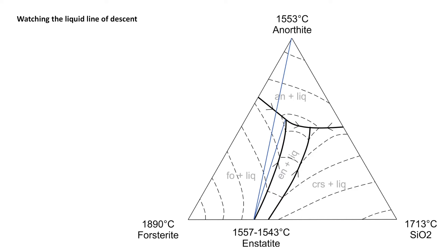What's useful at the start of these diagrams is if we draw lines between the peritectic phase — which is enstatite in this case — and anorthite. I've drawn one line between there and anorthite, and then I've drawn another line between enstatite and the peritectic point.